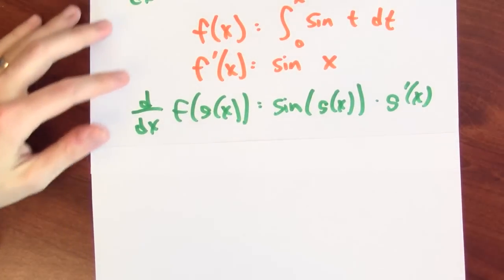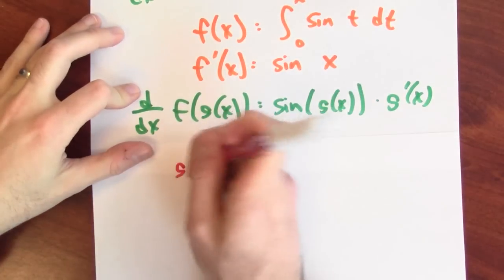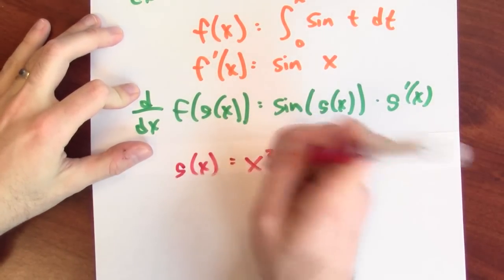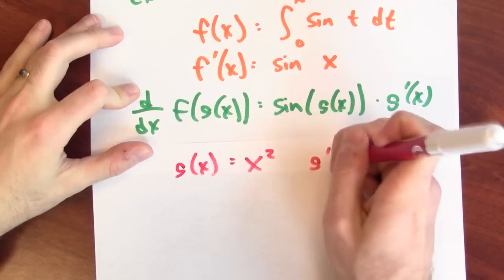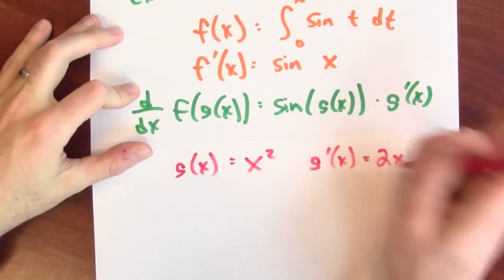Let's make it even more concrete. Let's say that g is the squaring function. So if I'm making g the squaring function, then the derivative of g is just 2x.